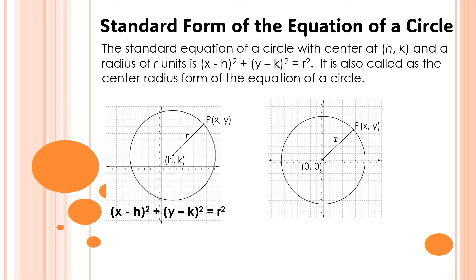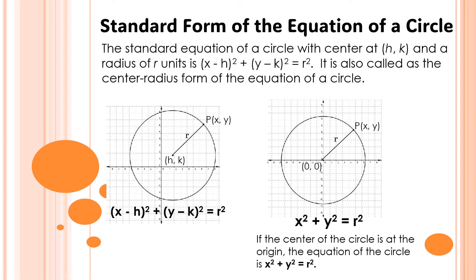And if the center of the circle is located at the origin of the Cartesian plane, wherein the coordinates of the center of the circle is (0, 0), so the value of h is 0 and the value of k is 0. So the equation of the circle is x squared plus y squared is equal to r squared.